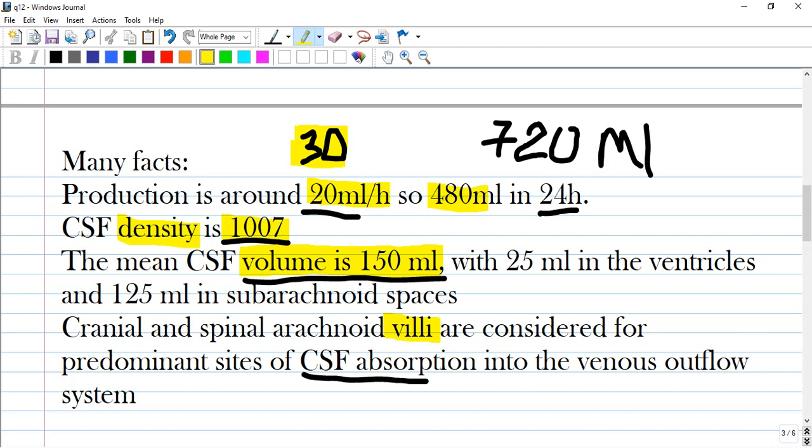Cerebrospinal fluid density is 1007. The mean CSF volume is 150 ml, with 25 ml in the ventricles and 125 ml in subarachnoid spaces. Cranial and spinal arachnoid villi are considered for predominant sites of CSF absorption.